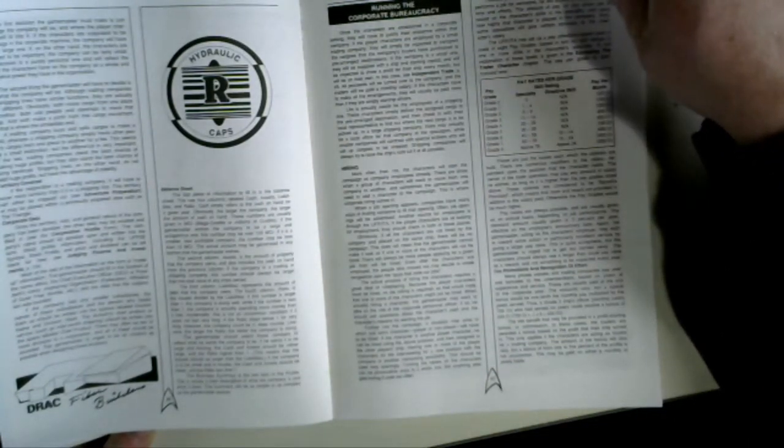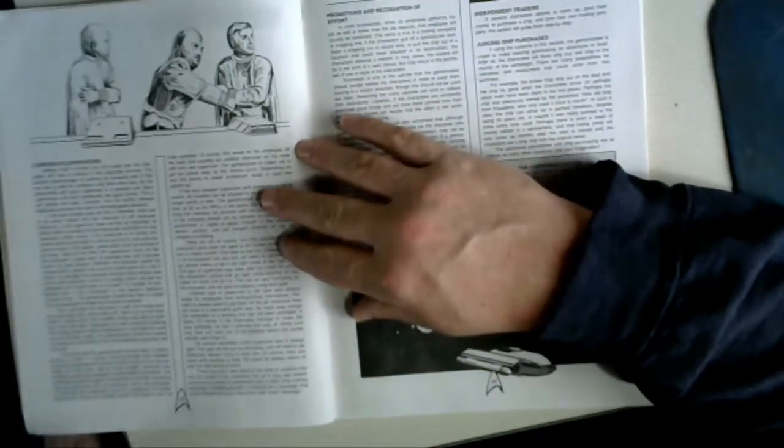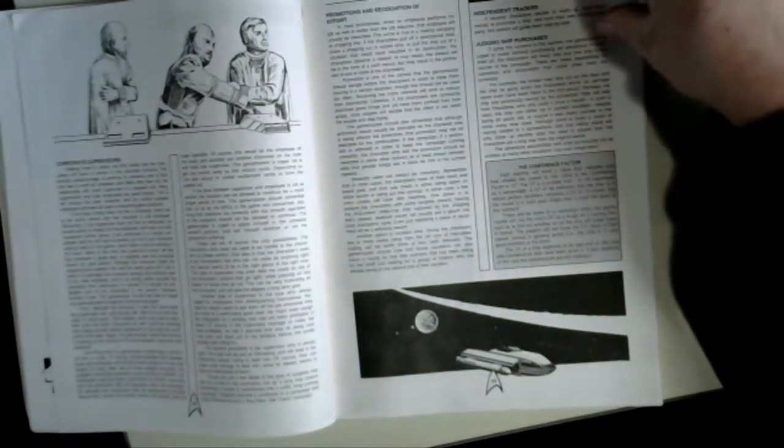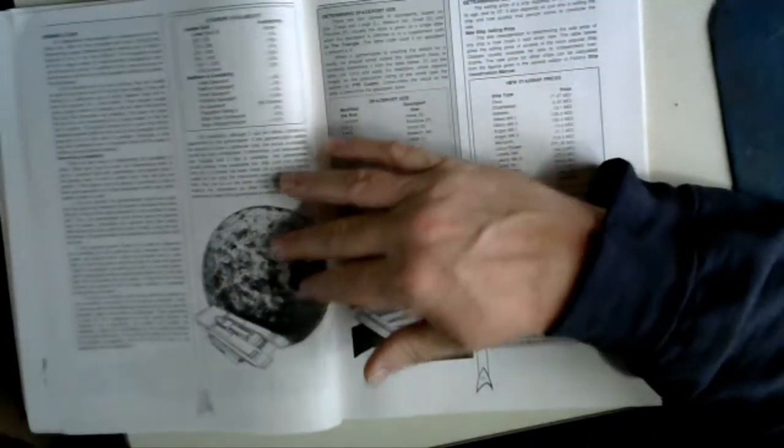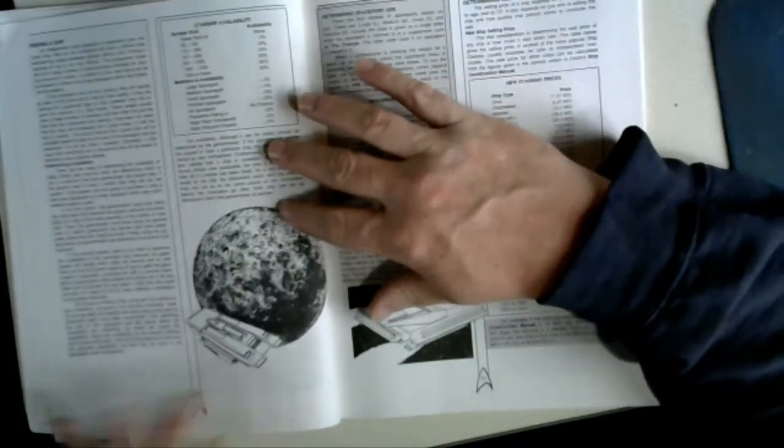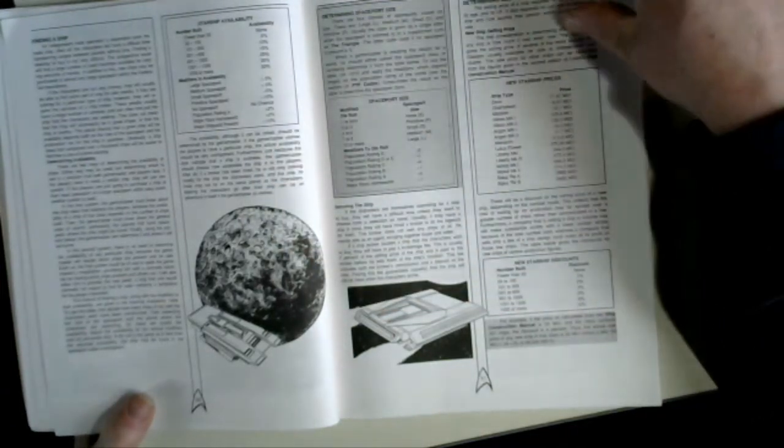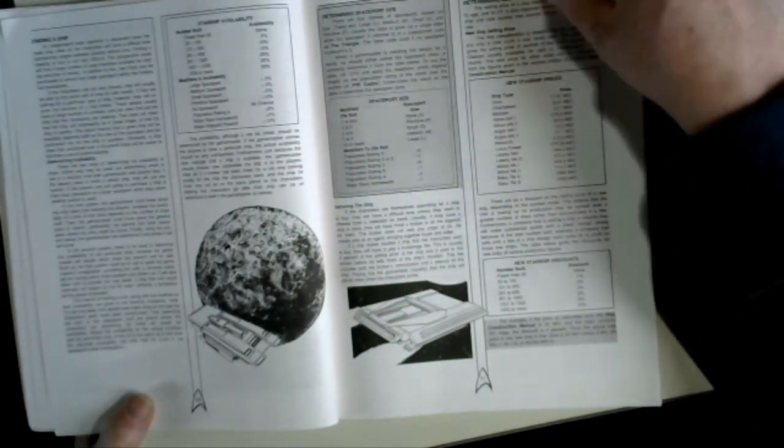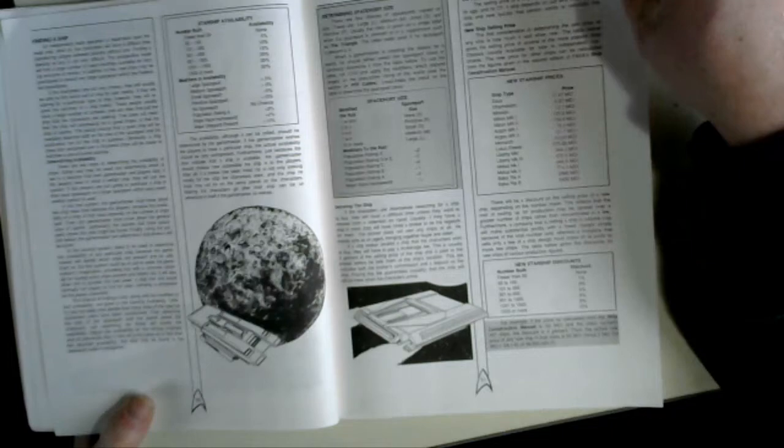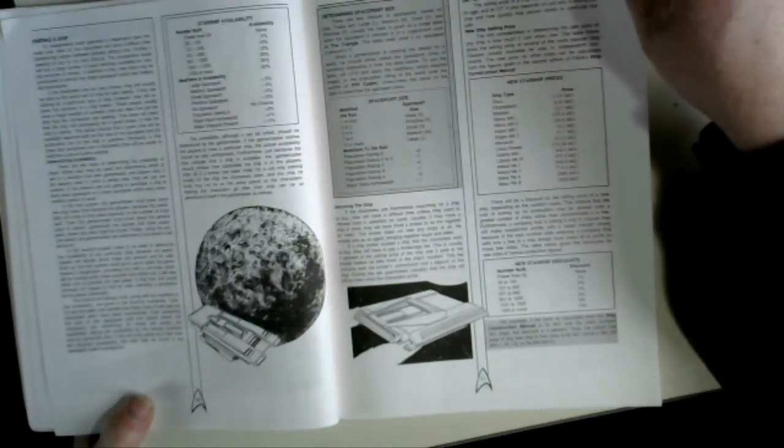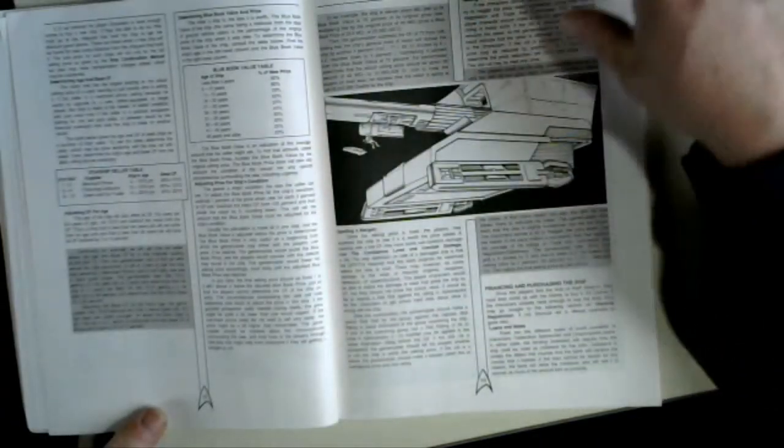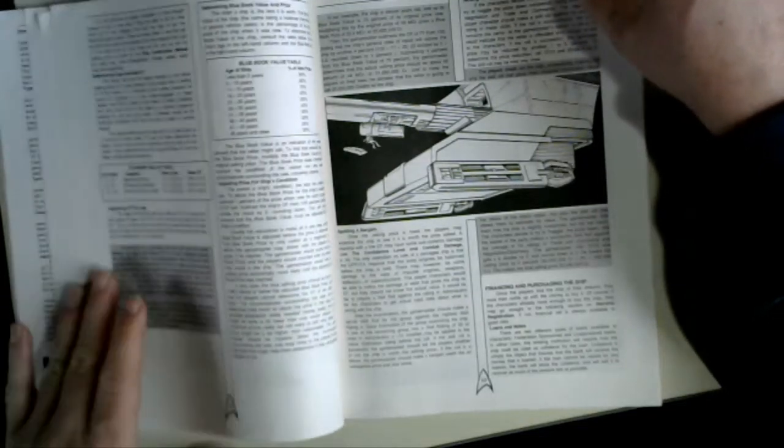Judging trade. Balance sheet, running a corporate bureaucracy, corporate supervisors, independent trade. So not necessarily a ship captain. Could be a member, you might find yourself working for a corporation, and the corporation owns the ship. Finding your ship, securing it, determining a selling price, how much to pay for it, blue book value.